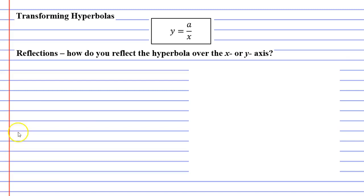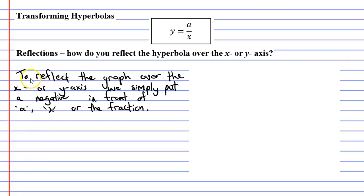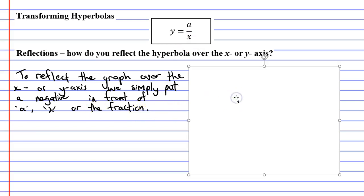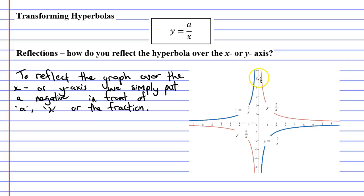To reflect the graph over the x or the y-axis, we simply put a negative in front of a, in front of the x, or in front of the fraction. When we had y equals 2 over x in red, putting a negative out the front gives the blue graph, which is a reflection either over the x or the y-axis.